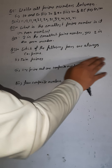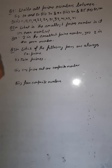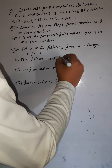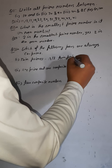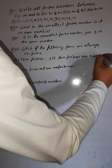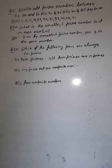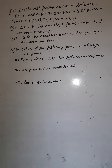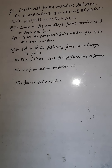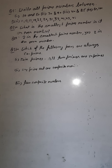So we write: all twin primes are co-primes. This is the conclusion we get here — any twin prime numbers you take, all twin primes are co-prime numbers.